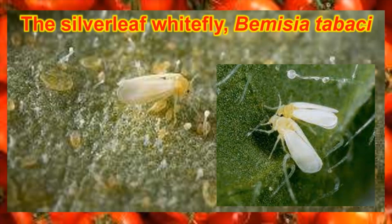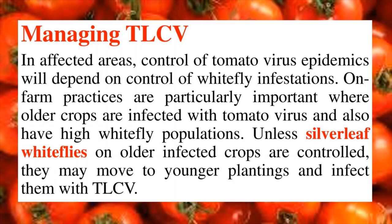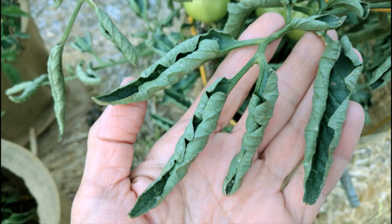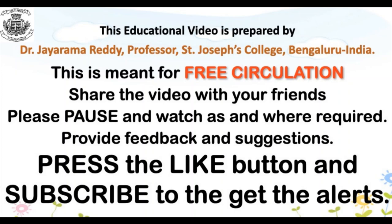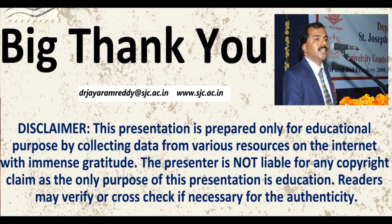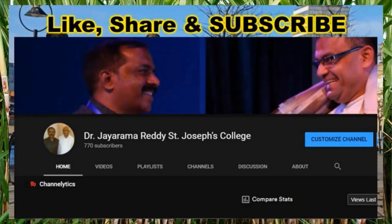Coming to controlling this disease — any viral disease is very difficult to control because we cannot spray antiviral chemicals onto plants. The best method is sanitation: if you see an infected plant, remove it from the crop and burn it far away. The next best method is to use disease-resistant varieties, though this is also challenging since viruses are constantly evolving. The third method is to control the whitefly population that spreads the disease.